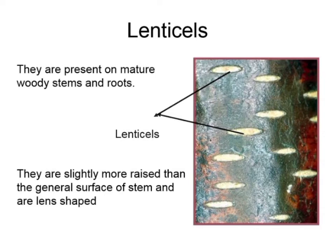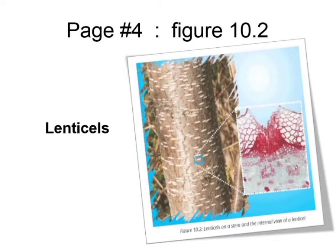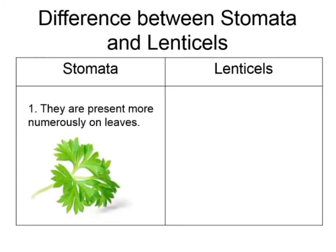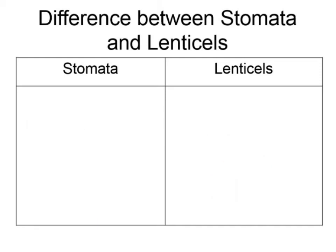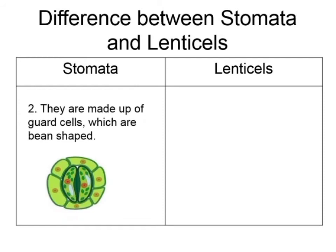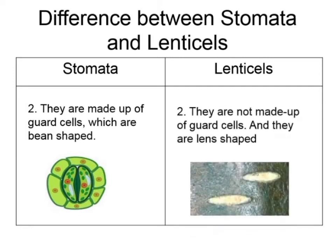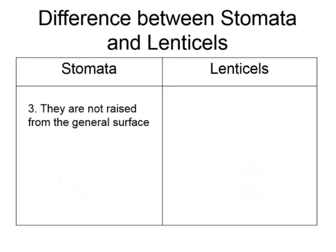Now let's discuss the differences between stomata and lenticels. Stomata are present more numerously on leaves, while lenticels are present on mature woody stems and roots. Stomata are made up of guard cells which are kidney-shaped, while lenticels are not made up of guard cells and they are lens-shaped.